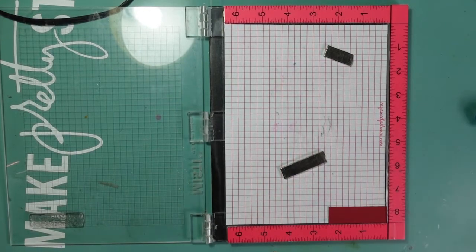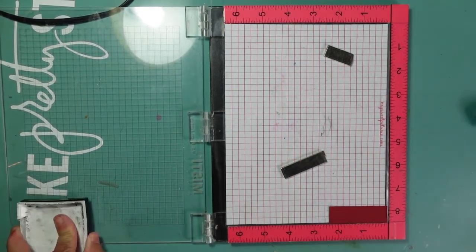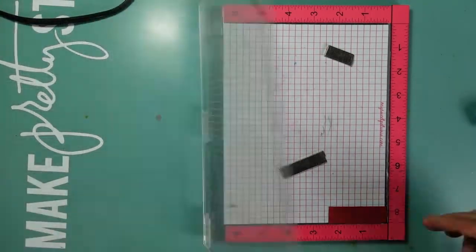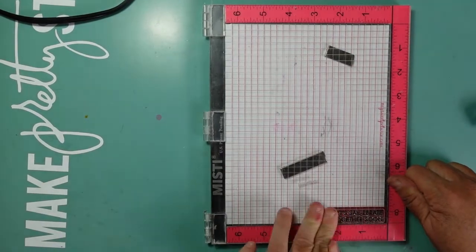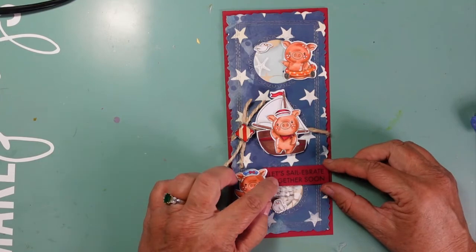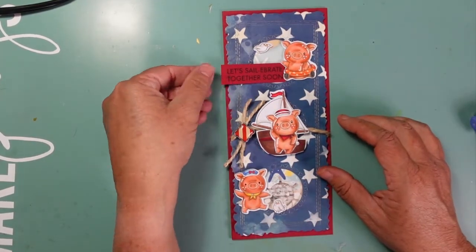Here is where I'm stamping my sentiment. I am going to use VersaMark, actually VersaFine Black Onyx ink. That always gives me a nice crisp image. It does stay wet a little bit longer, so you do need to be a little bit careful when you're handling it if you don't let it sit and dry.